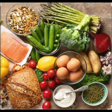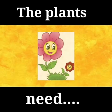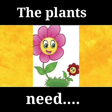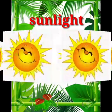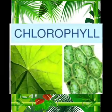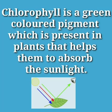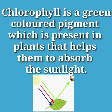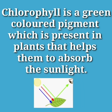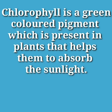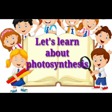So the plants need water, carbon dioxide, sunlight, and chlorophyll to make their food. Chlorophyll is a green colored pigment which is present in plants that helps them to absorb the sunlight. Now let's learn about the process of photosynthesis.